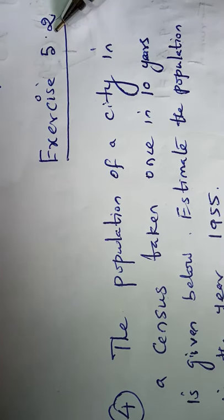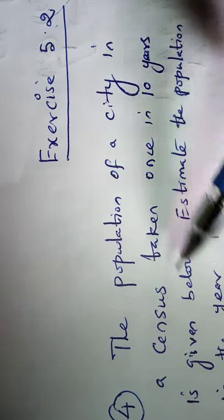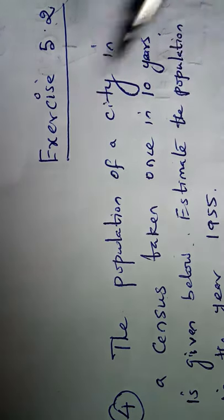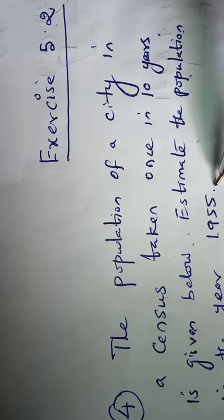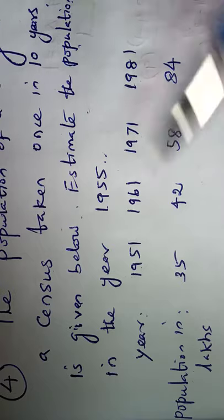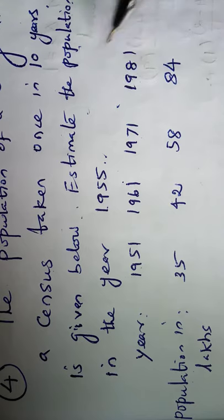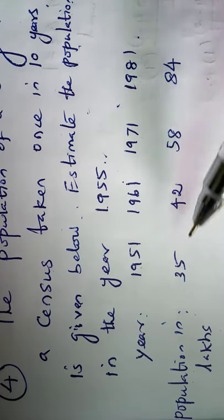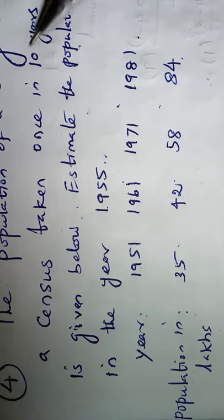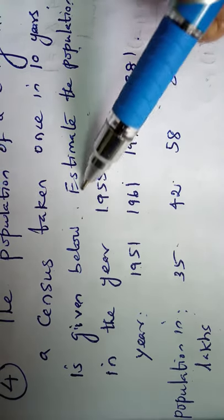Exercise 5.2, problem number 4. The population of a city in a census taken once in 10 years is given below. Estimate the population in the year 1955. The two pieces of information given are: years 1951, 1961, 1971, 1981, and corresponding population in lakhs: 35, 42, 58, and 84. In this problem we have to find the estimated population in the year 1955.